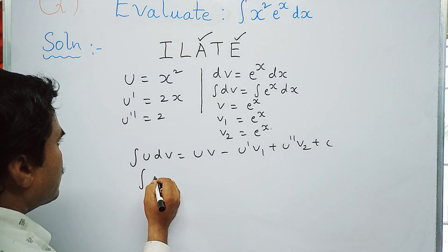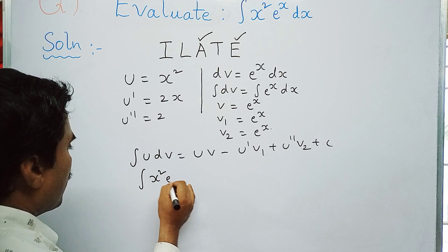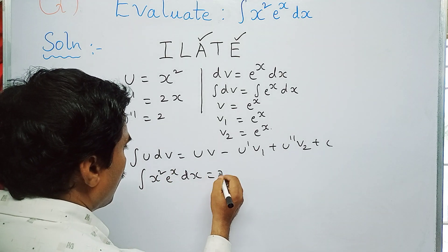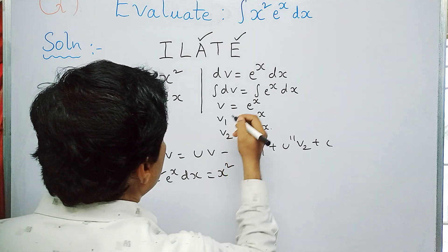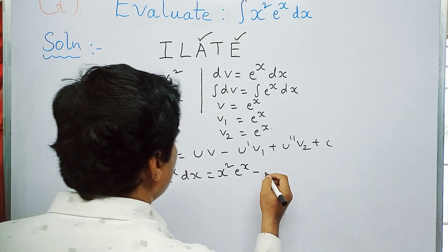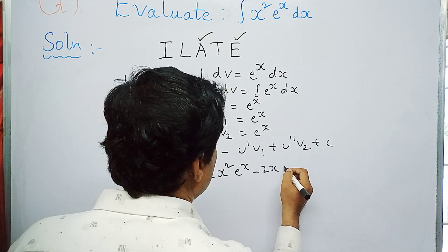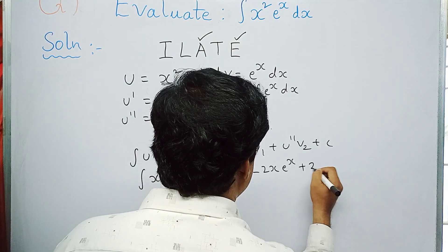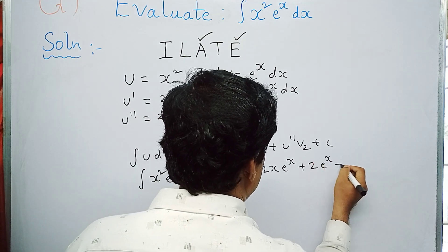So integral x^2 e^x dx = x^2·e^x - 2x·e^x + 2·e^x + c. This is the final solution for the above problem.